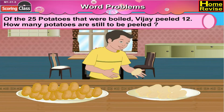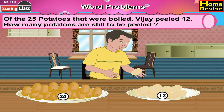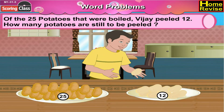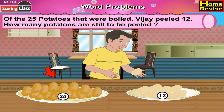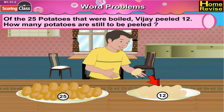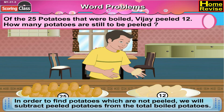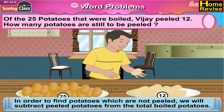Of the 25 potatoes that were boiled, Vijay peeled 12. How many potatoes are still to be peeled? Total number of potatoes: 25. Vijay peeled potatoes equal to 12. In order to find the potatoes which are not peeled, we will subtract the peeled potatoes from total boiled potatoes.